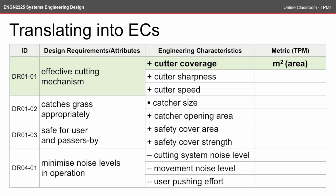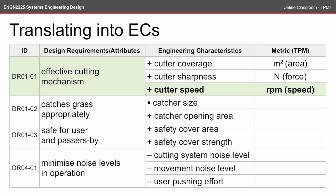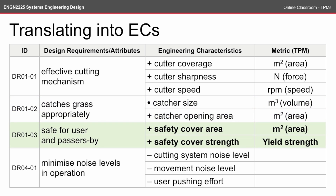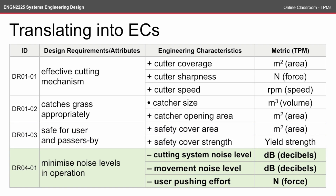We go through and define a metric, which is the unit, and a TPM, which is the measurement. Cutter coverage is an area measured in meters squared — though when we go to testing it might become area per minute. Cutter sharpness could be measured in the force required to effectively get a cut. Cutter speed in revolutions per minute, catcher size in meters cubed, and catcher opening area in meters squared. Safety cover area in meters squared, and safety cover strength measured in yield strength — chosen because we don't want the material to break. Finally, decibels for noise levels and force for pushing effort. This gives us our completed TPMs table.